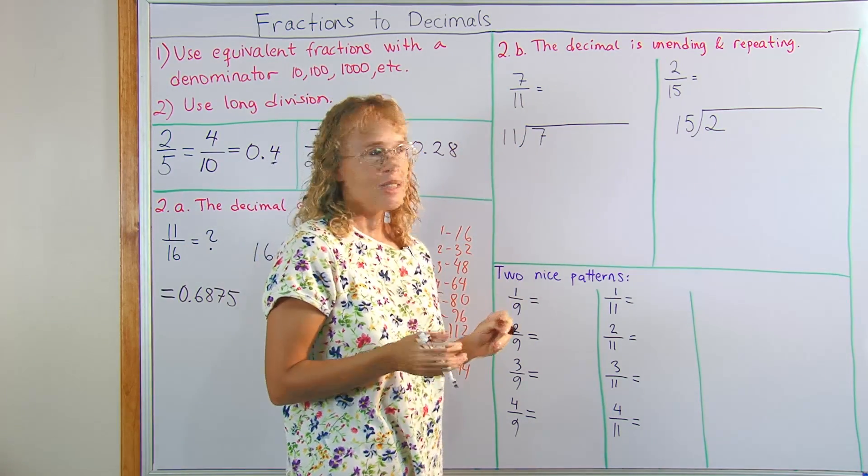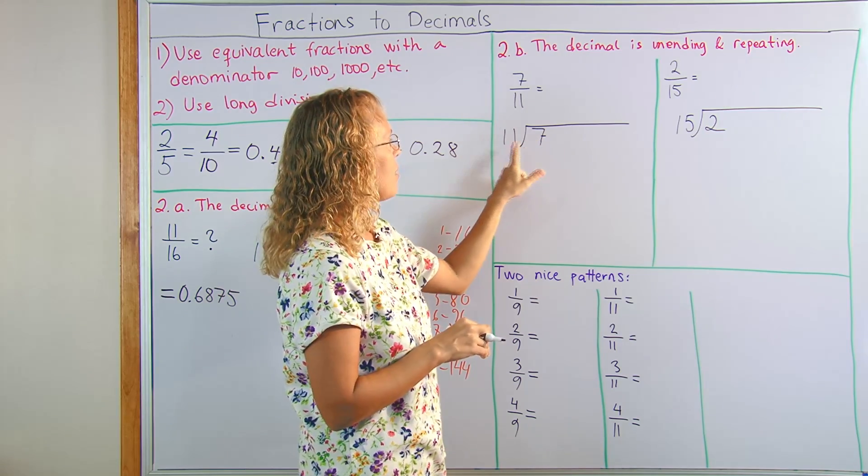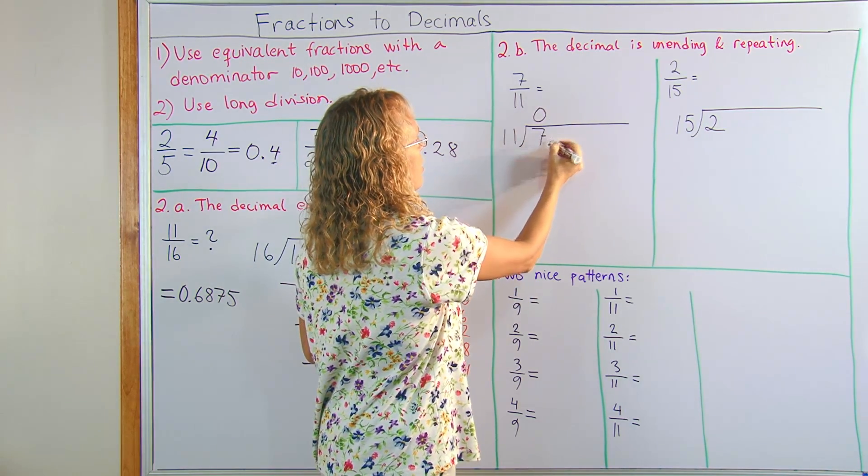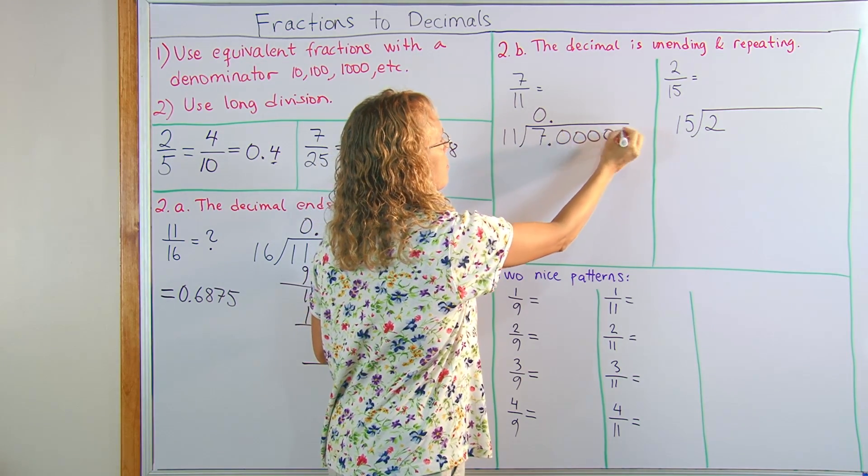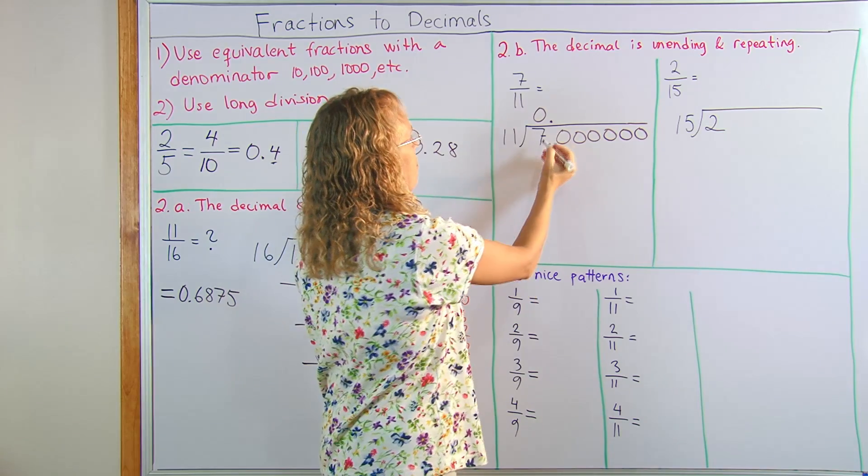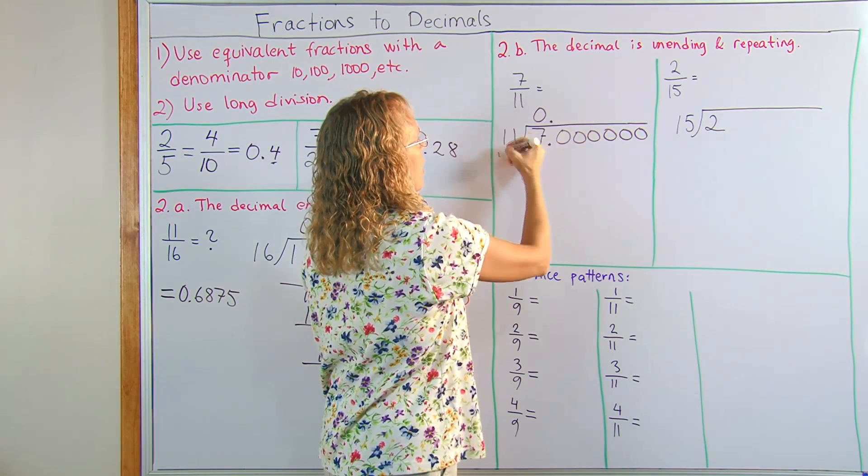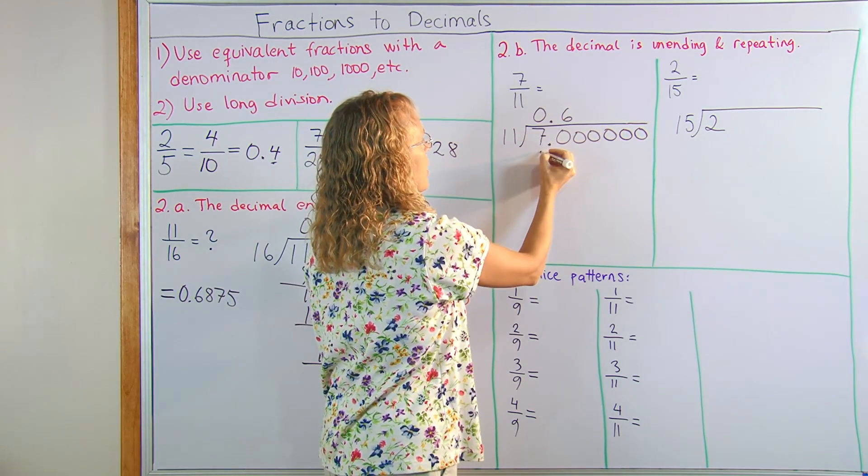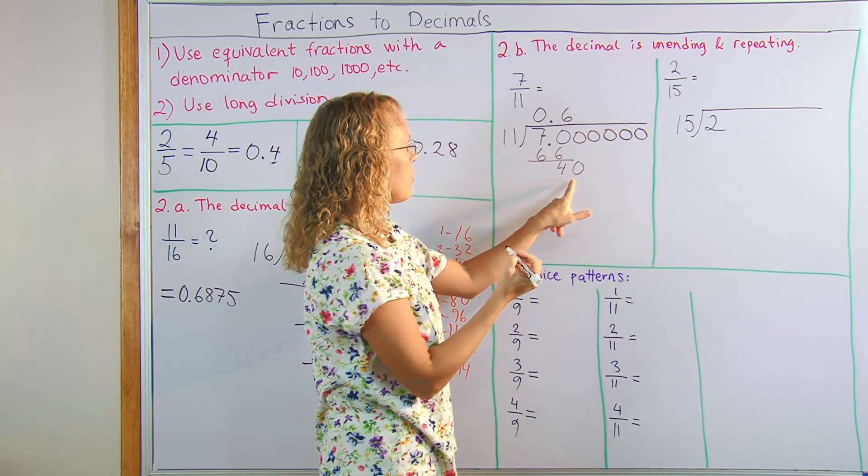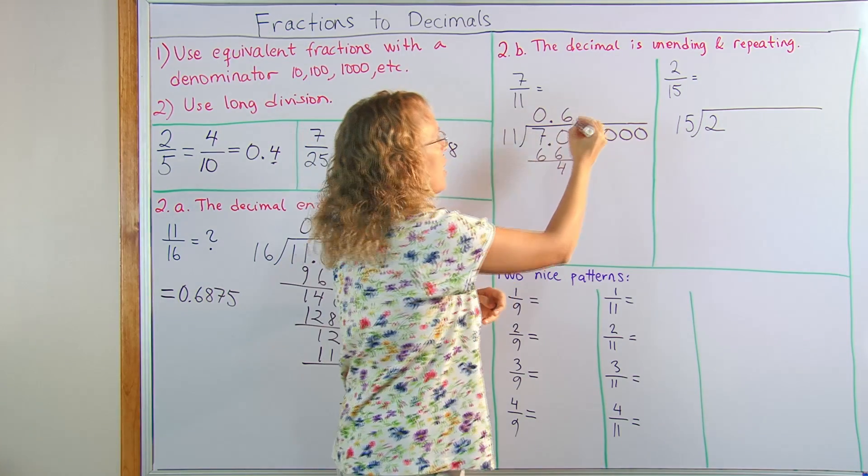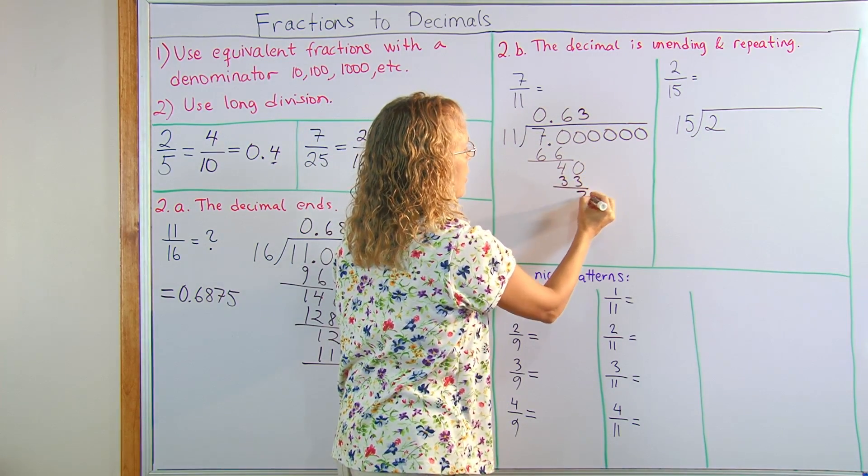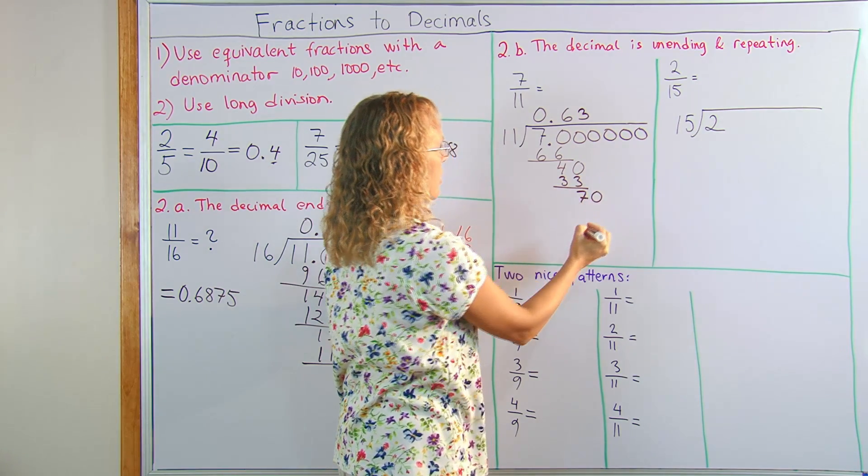Here I have 7 elevenths. So I divide 7 divided by 11. 11 doesn't go into 7 any times, 0 here. And then I have to put some decimal zeros here. Don't know how many, but anyway. 70. 11 goes into 70 six times. 6 times 11, 66. Subtract and we get 4. And drop down 0. 40. 11 goes into 40 three times. 3 times 11, 33. Subtract and 7. And then 0. 70.